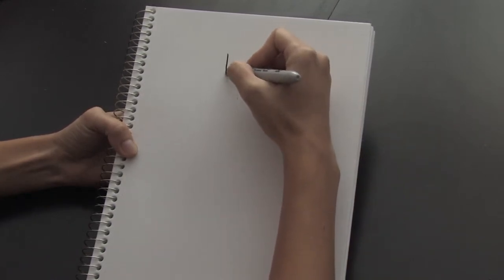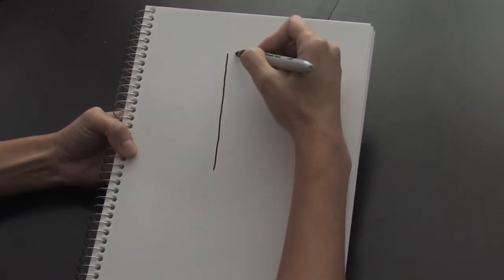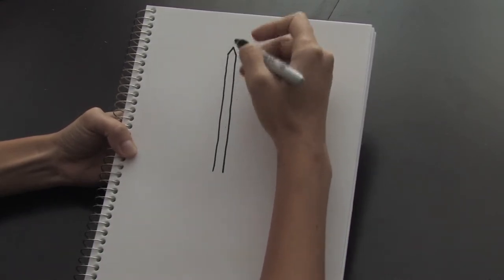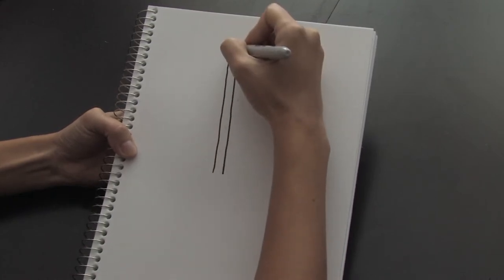First, let's draw two vertical lines like this and an upside down V shape on the top. So here's this sword.